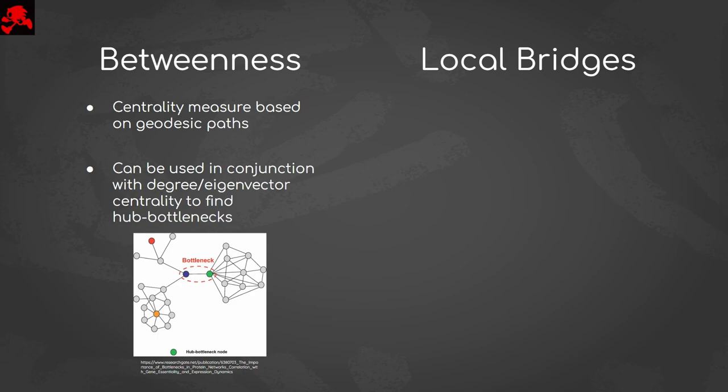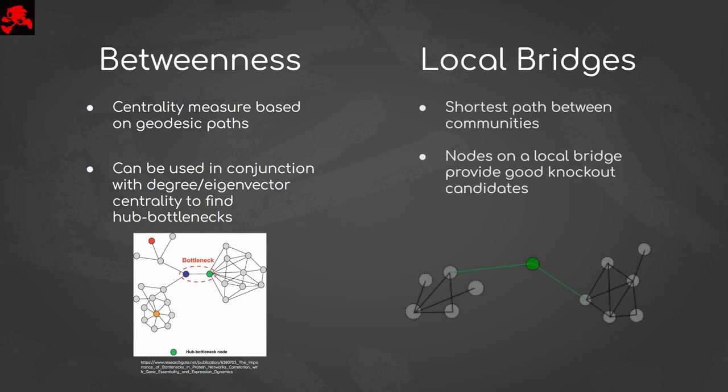A similar approach which circumvents the need for centralities is to find local bridges, which are the geodesic paths between communities. By collapsing a local bridge, we cut communication between adjacent communities and complete our desired task.